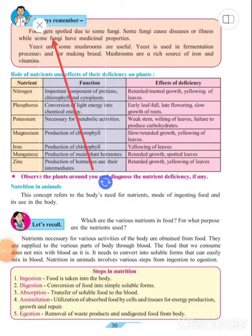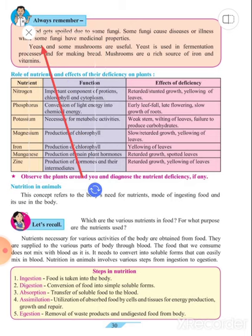Good morning class, this is the fourth part of our lesson number four: Nutrition in a Living Organism. In our previous video we have learned about heterotrophic plants, insectivorous plants and saprophytic plants. Come on, page number 30. Always remember, food gets spoiled due to some fungi.